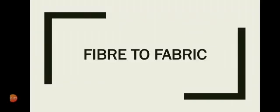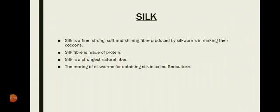Today in the chapter Fiber to Fabric, I am going to discuss another important animal fiber — silk. Silk is a fine, strong, soft and shining fiber produced by silkworms in making their cocoons. It is a type of natural fiber obtained from an insect known as the silk moth. Since it is obtained from an insect, it is an animal fiber. It is made up of protein and it is the strongest natural fiber.